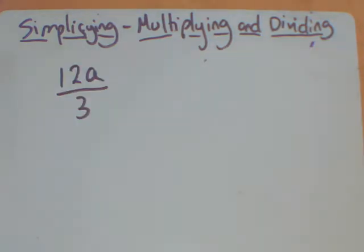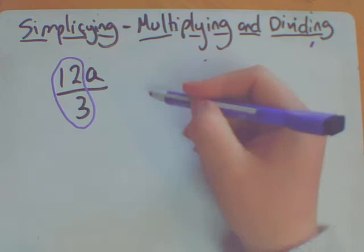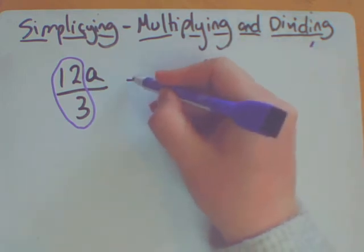Let's have a look at dividing then. So here we have a division question. We've got 12a divided by 3. First thing, we're doing this in two separate sections again. I'm going to do the numbers and then I'm going to do the letters. So take the 12 divided by 3 first of all. 12 divided by 3 is going to give me just 4.